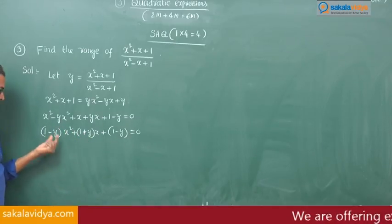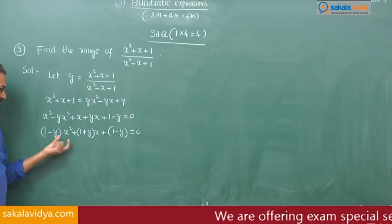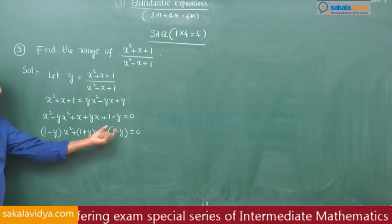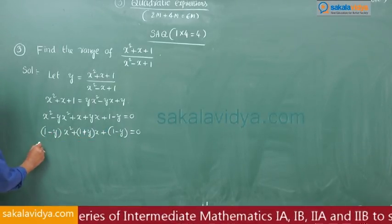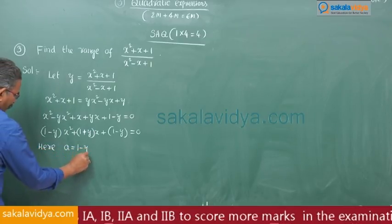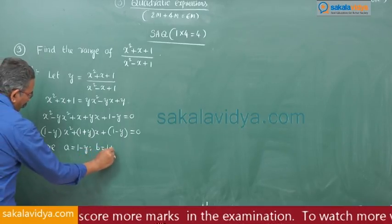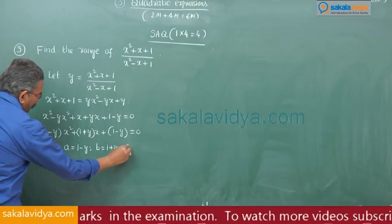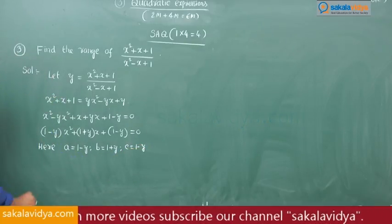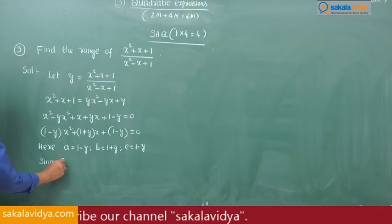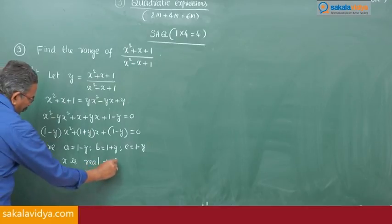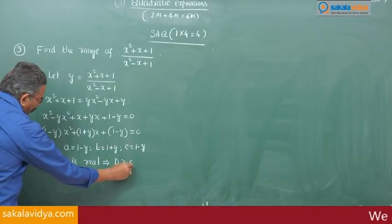Comparing with ax² + bx + c = 0, we get: a = 1 - y, b = 1 + y, c = 1 - y. Since x is real, that implies discriminant is greater than or equal to 0.